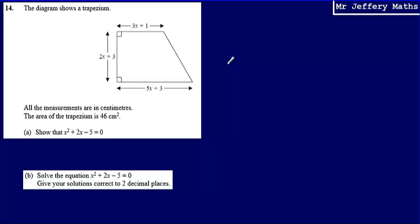This is question 14 from a series of videos looking at the Edexcel practice papers. We're told that the diagram shows a trapezium with certain lengths given. All measurements are in centimetres, and the area of the trapezium is 46 centimetres squared. We're asked to show that x squared plus 2x minus 5 is equal to 0.